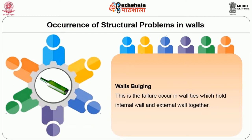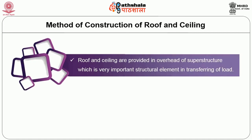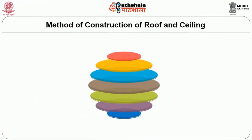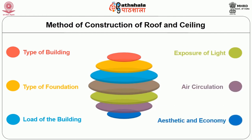Wall bulging is a failure occurring in wall ties which hold the internal wall and external wall together. Roof and ceiling are provided overhead in the superstructure and are very important structural elements in transferring loads. The main difference between roof and ceiling is that the roof is the exterior surface of the overhead and the ceiling is the interior surface. For example, a three-storey building has only one roof but three ceilings. The selection of roof depends on many factors.